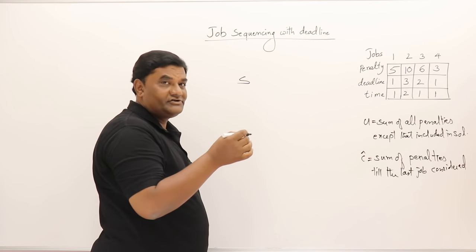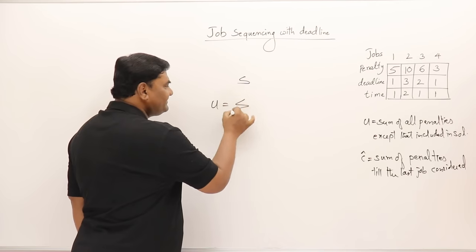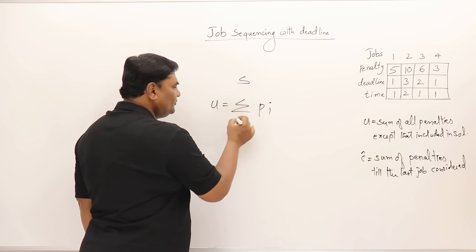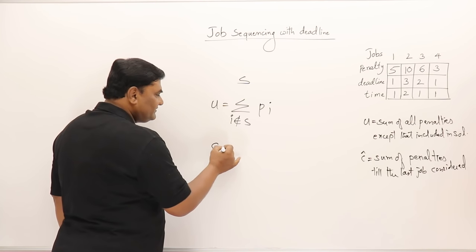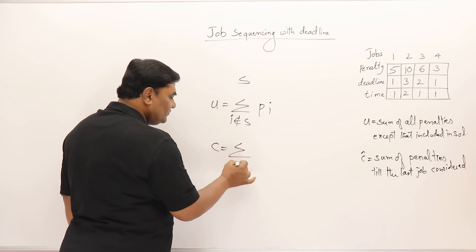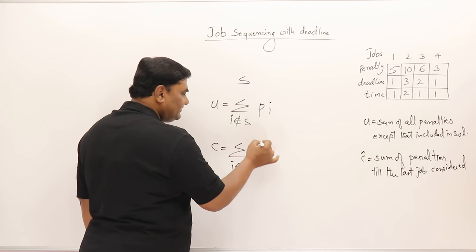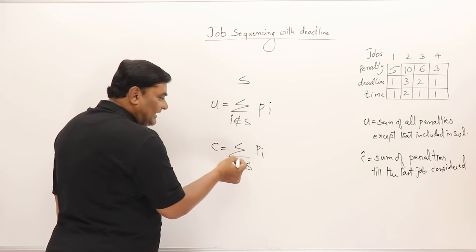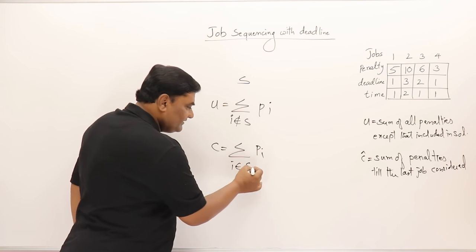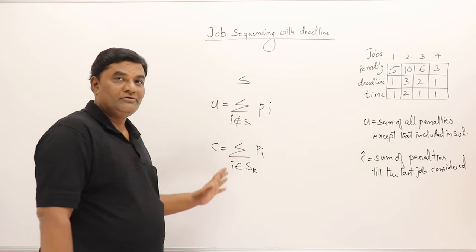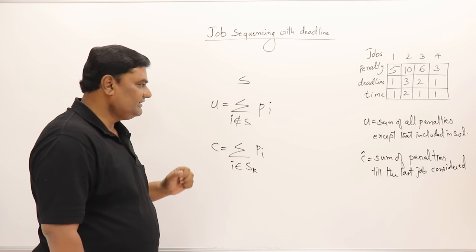If S is the set of jobs included in the solution, then the upper bound is the sum of penalties of all jobs not in S. The cost is the sum of penalties of jobs not in S, considered up to the kth job we have taken. While solving, I will explain how these two are calculated.